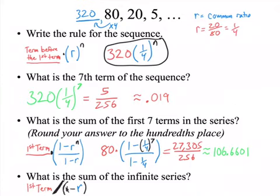Here's the formula. You simply use this formula, and it crunches it for you. It's kind of cool. So, if I take my first term, which is 80, I divide it by one minus my R, which is one-fourth.